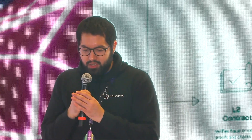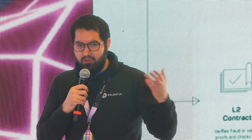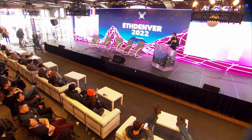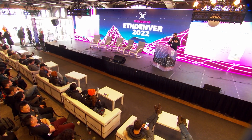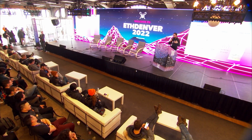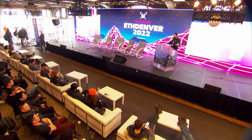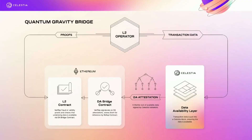The Quantum Gravity Bridge technology works as follows. You have your rollup — listed here as an L2 operator — and it does two things. One, it produces some sort of proof, claim, or attestation about what happens in the rollup, in other words the effects of the transactions. Simultaneously, it also posts the actual transactions that caused that effect. These two things don't have to be placed in the same layer; you can use a separate data layer and a separate settlement layer.